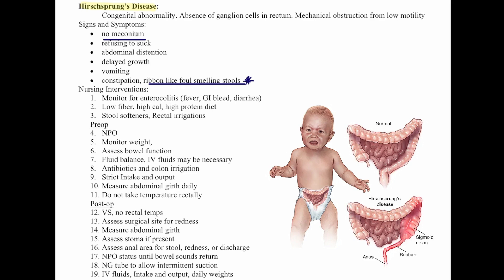Post-op: take vital signs but still no rectal temperatures. Assess the surgical site for redness, abdominal girth, stoma if present, and the anal area for stool, redness, or discharge. Patient is NPO until bowel sounds return, with an NG tube for intermittent suction, IV fluids, intake and output, and daily weights.